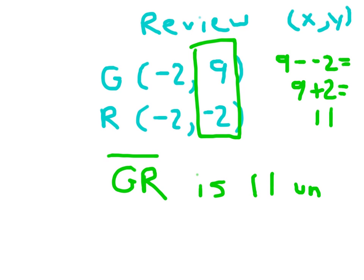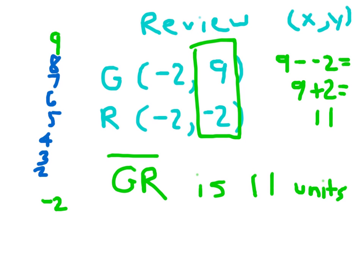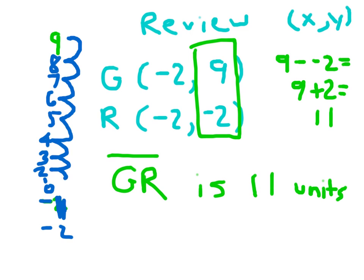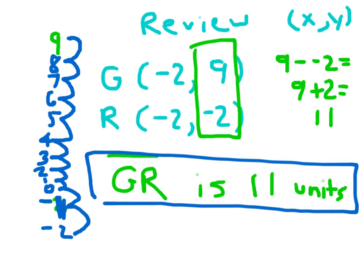11 units. Another approach is to count down from 9 all the way to negative 2, or count up from negative 2 to 9. Writing out all those numbers: 9, 8, 7, 6, 5, 4, 3, 2, 1, 0, -1, -2. Remember, you can't count 9 itself — it's 1 away, so counting gives 1, 2, 3, 4, 5, 6, 7, 8, 9, 10, 11. Line segment GR is 11 units long.